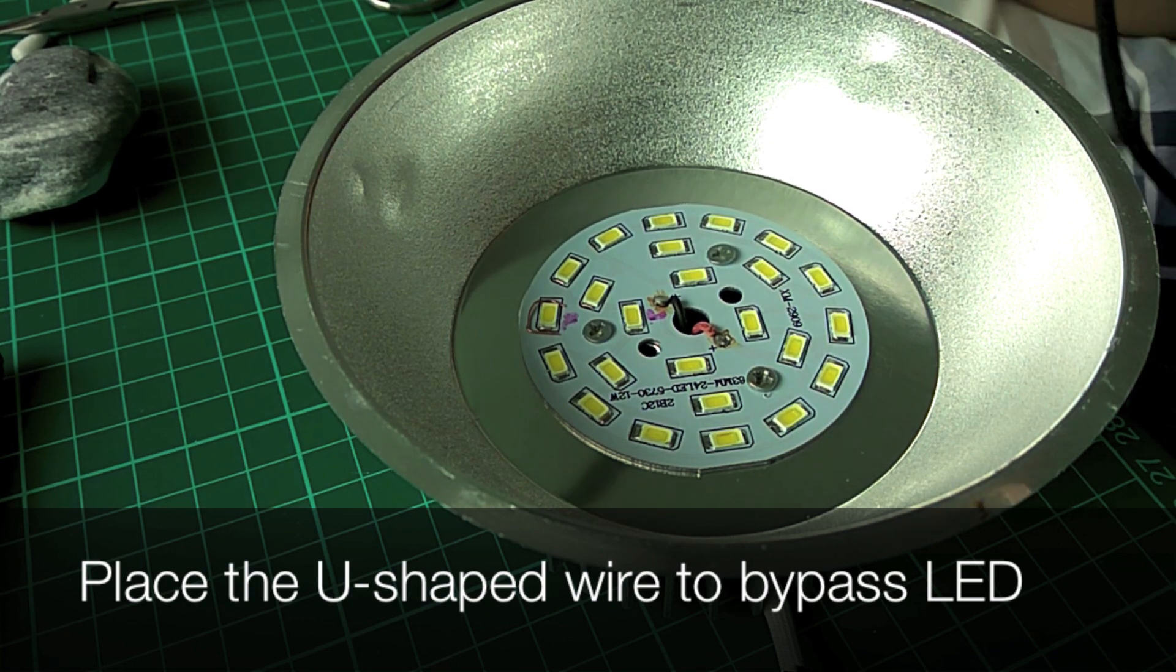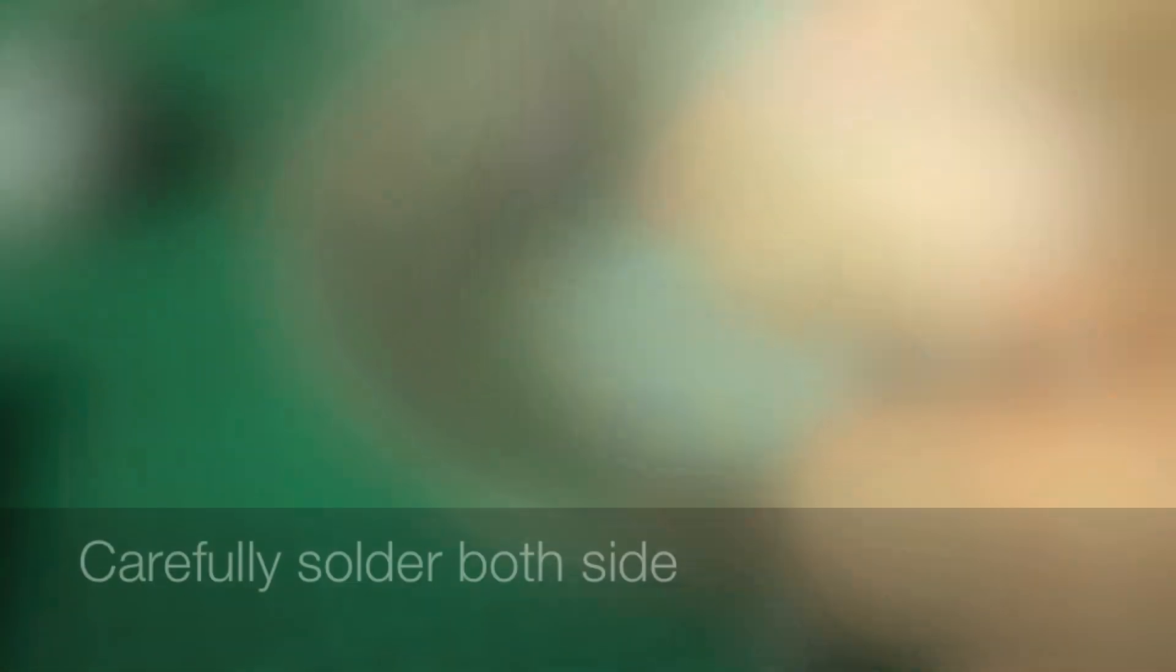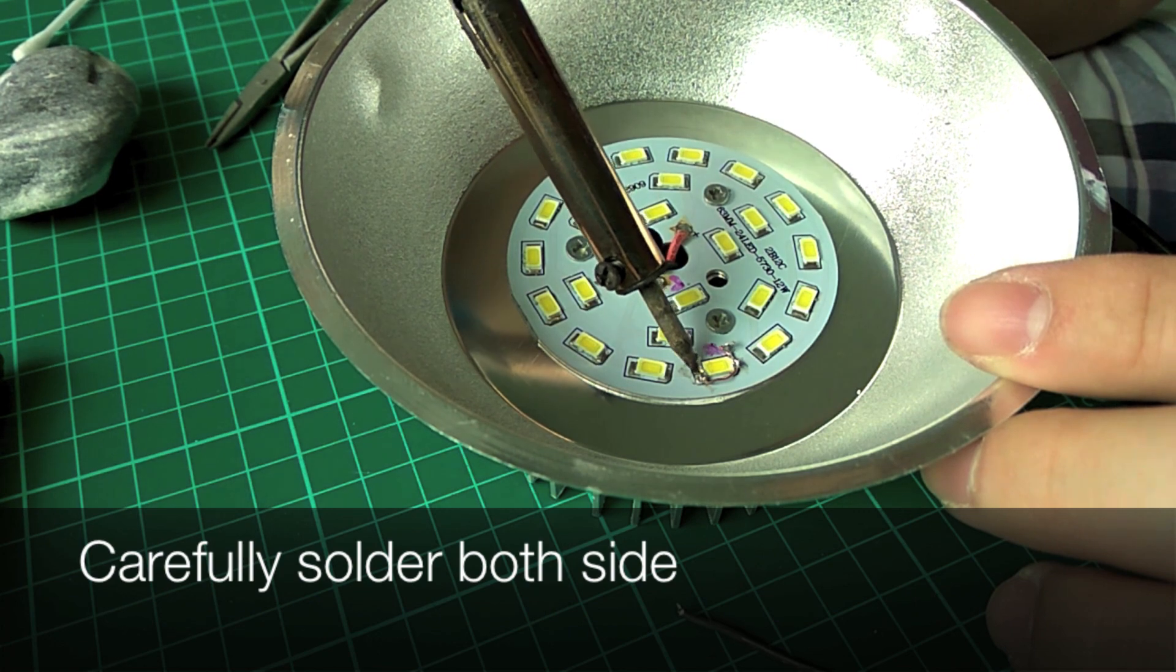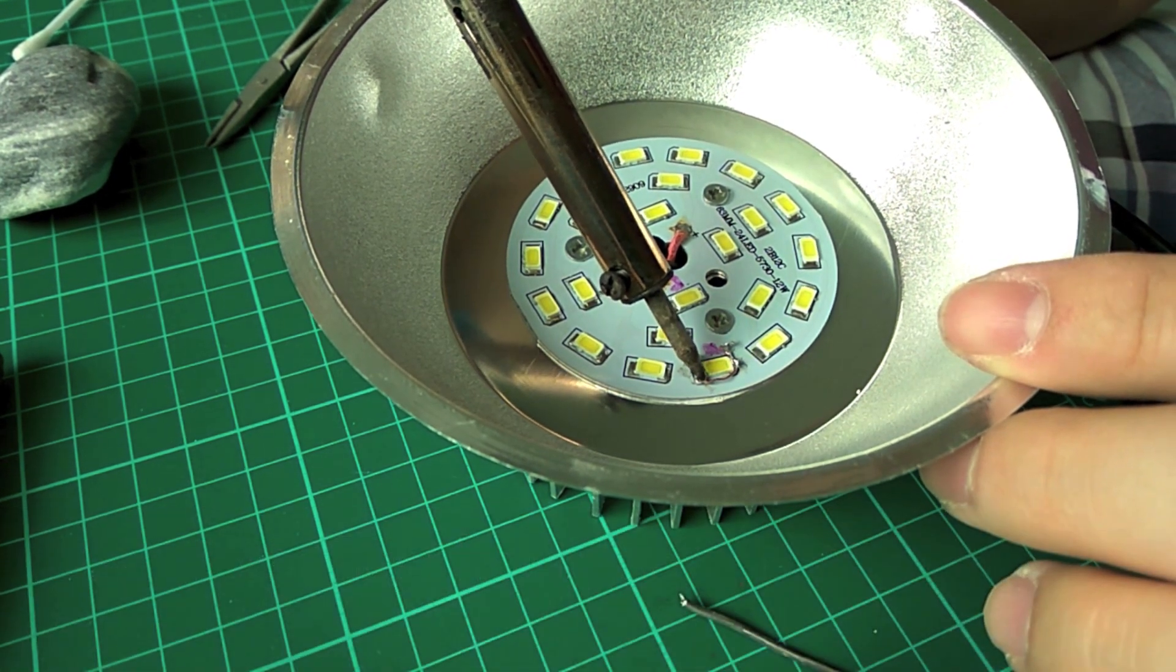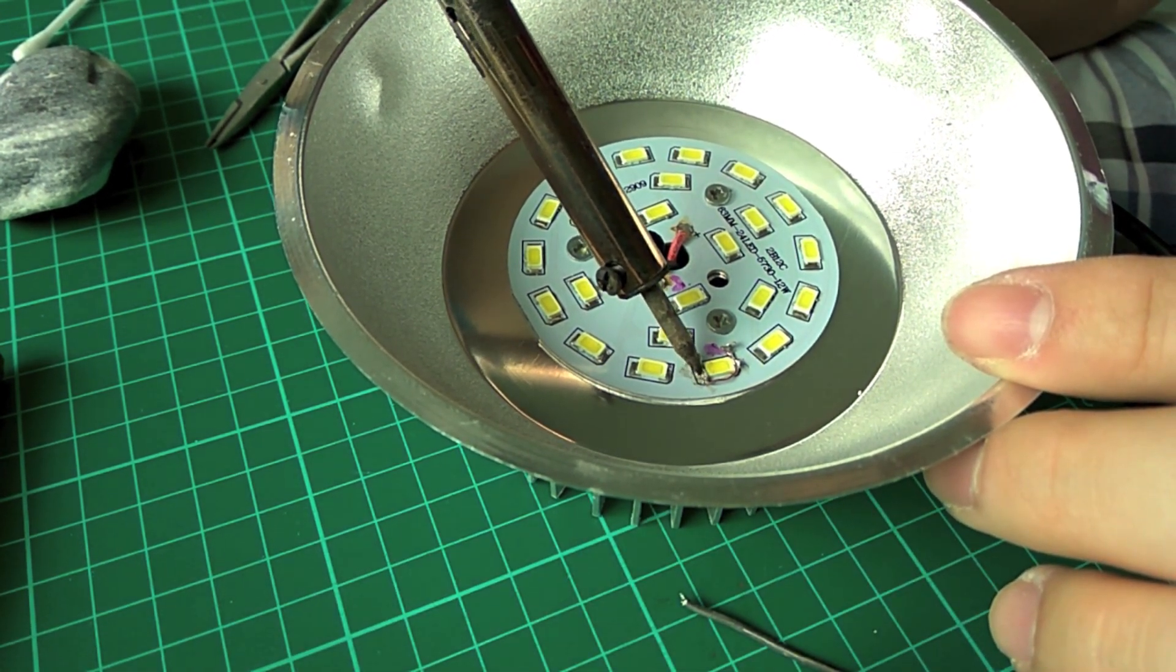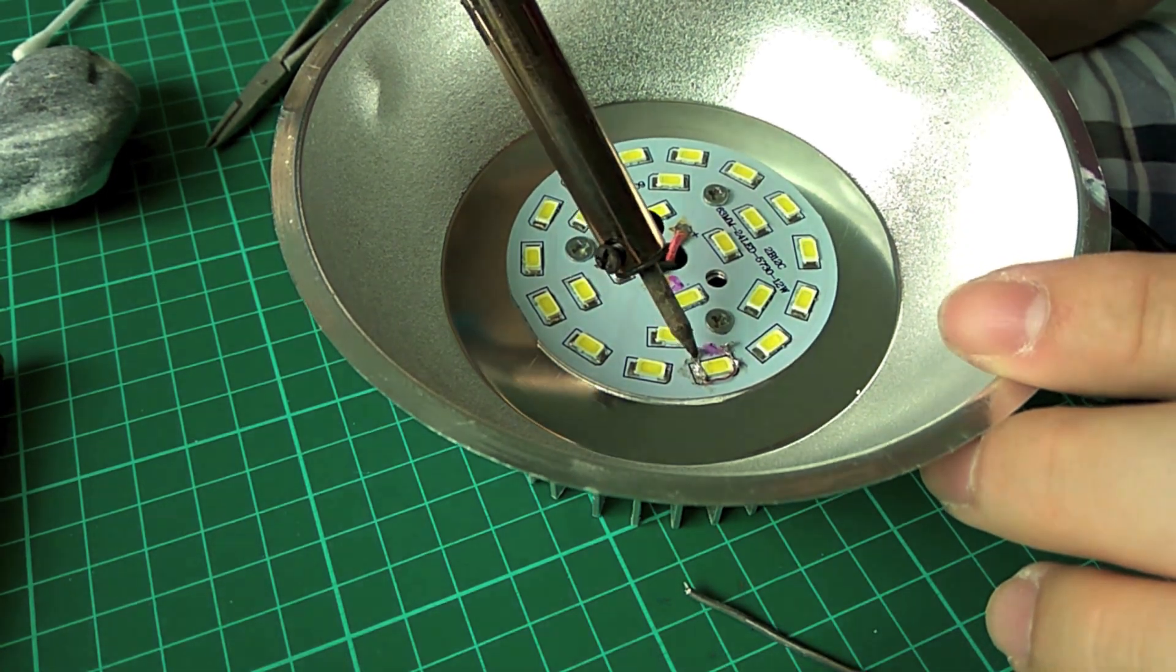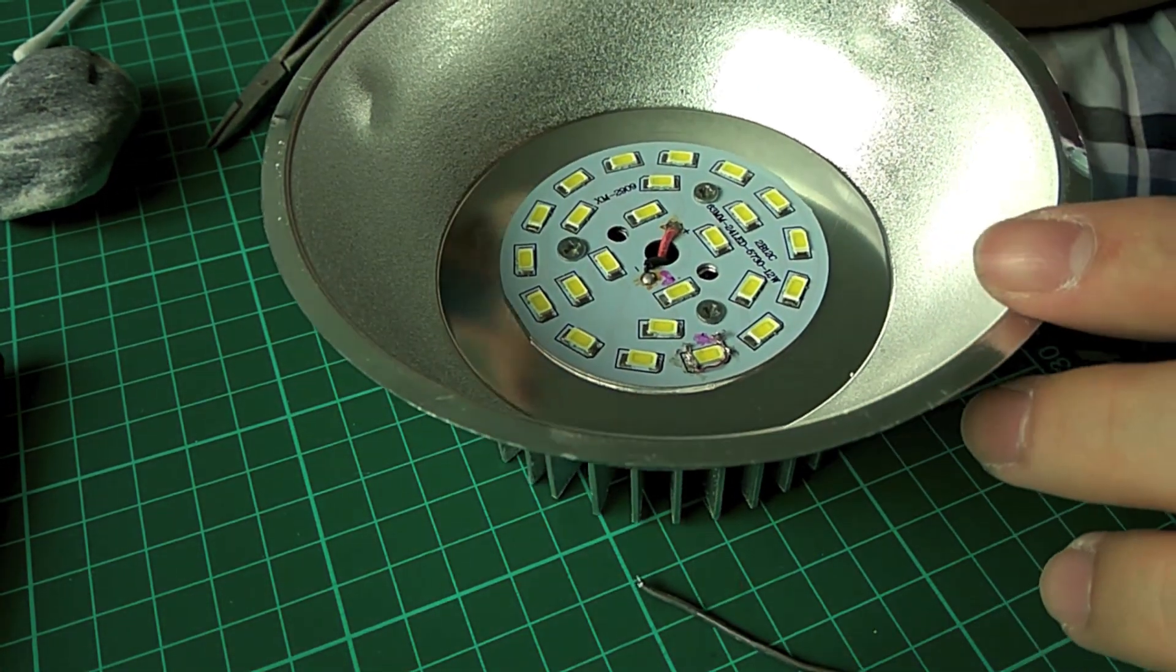Place the U-shape wire and properly solder both sides securely. This process will bypass the faulty LED and short the LED using this small cable.